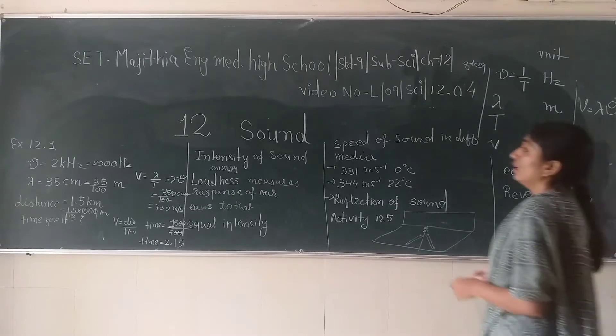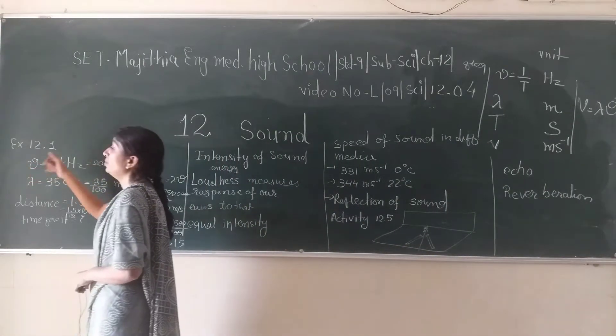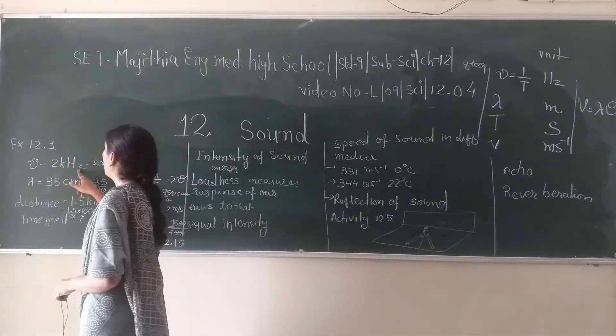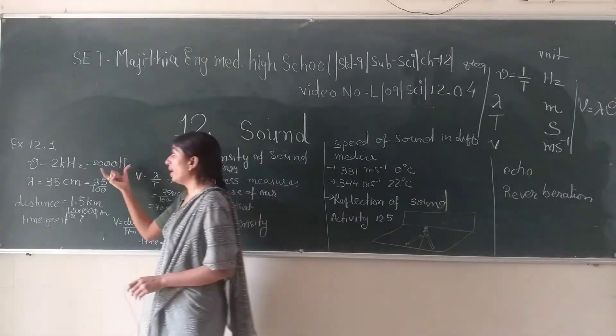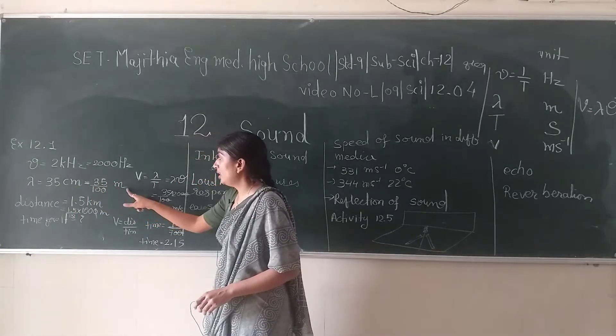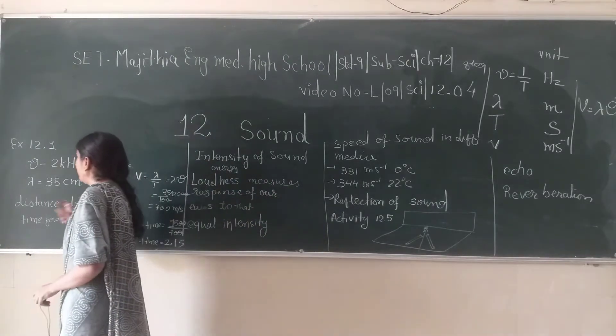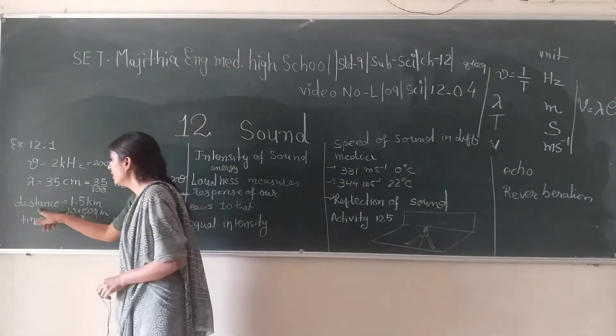Question number 1, that is 12.1. We have a wave which has frequency of 2 kilohertz. We will convert it into Hertz by simply multiplying by 1000. Lambda is 35 centimeter, we will convert it into meters by dividing by 100 to convert it into meters. Next is distance which is 1.5 kilometers.